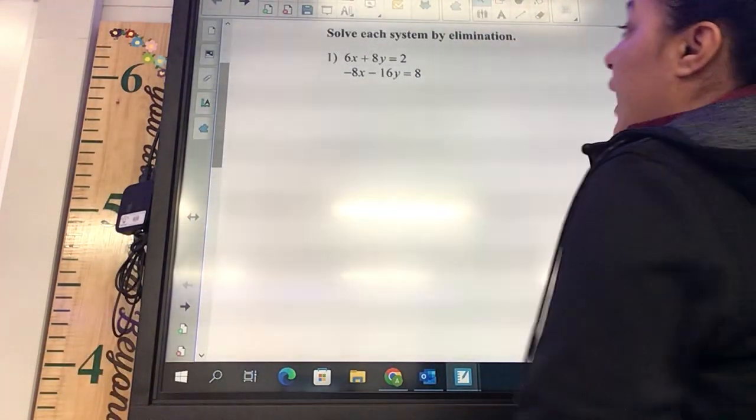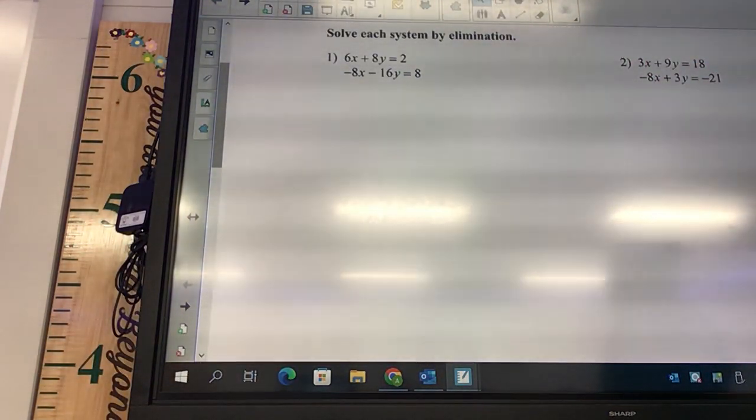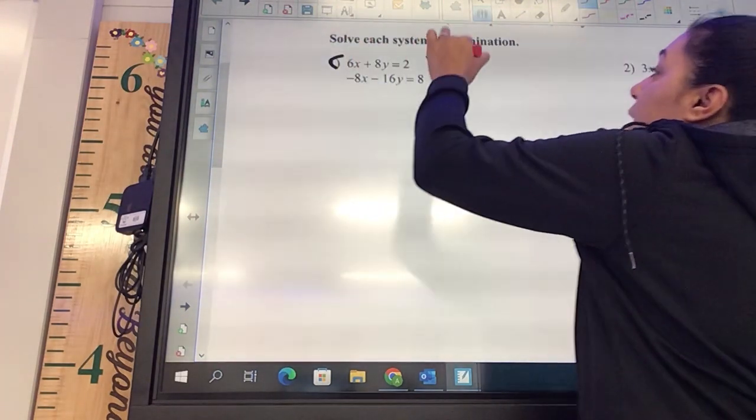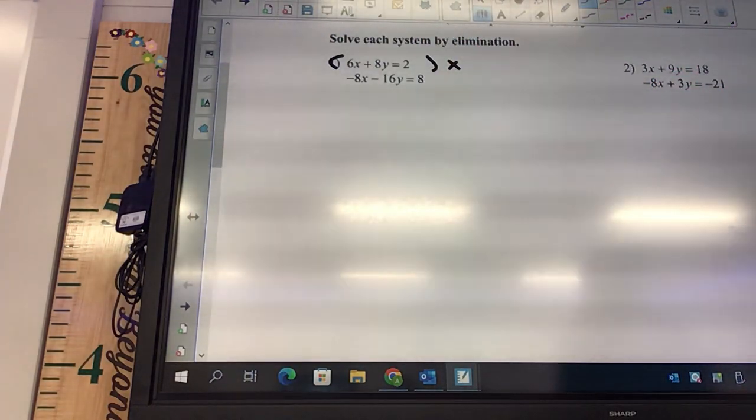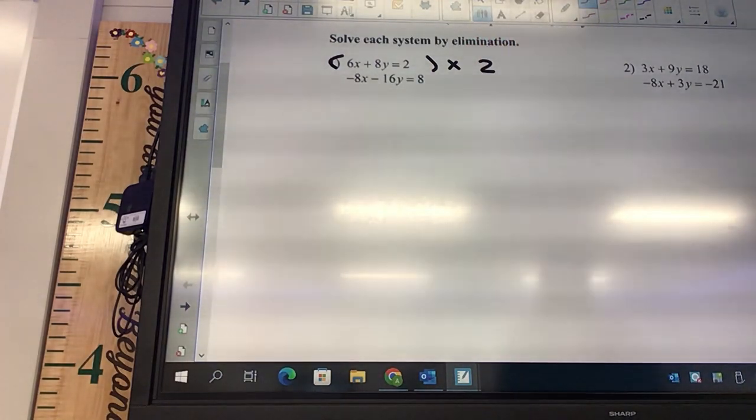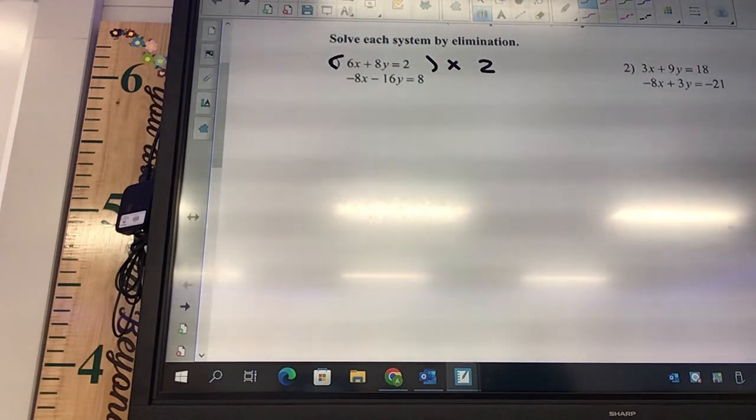The y's? Okay, which one's smaller, top or bottom? The top, right? The 8's smaller. So we're going to multiply that one. We're going to say times what? 8 times what gives me 16? 2. Okay, do we need to put a negative? How do you know? So if they're both negatives or both positives, meaning they're both the same, you need to put a negative on the outside.